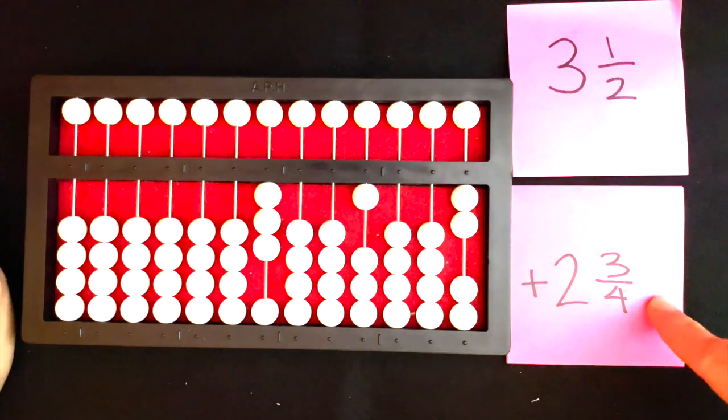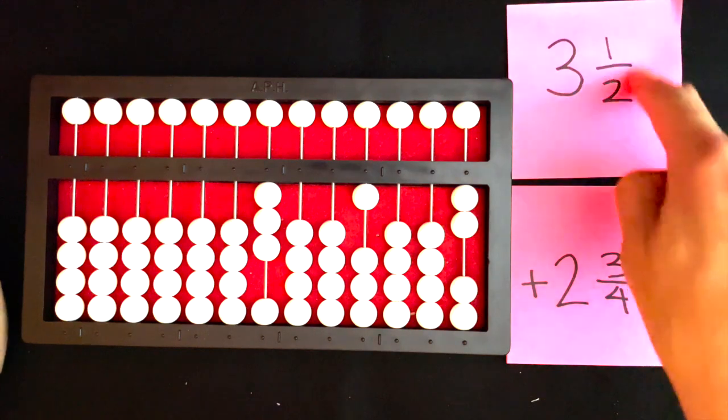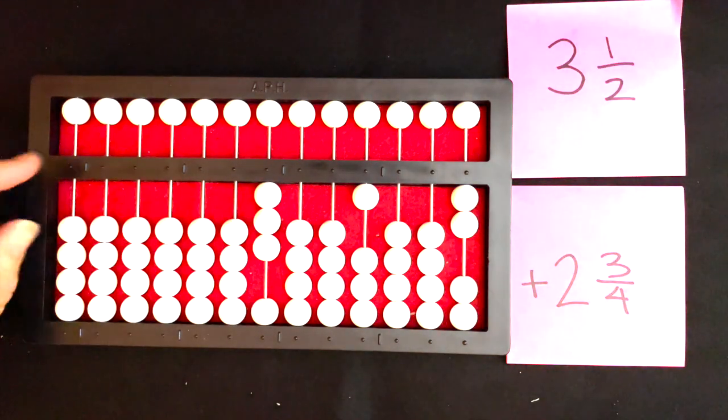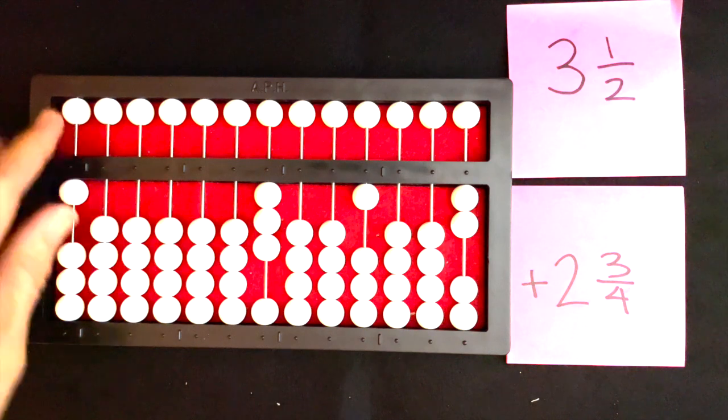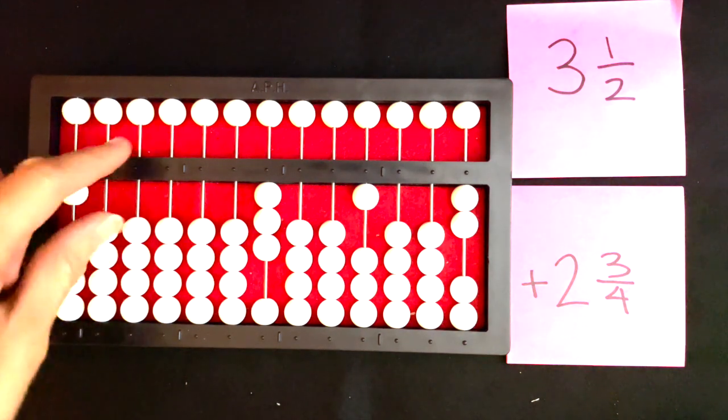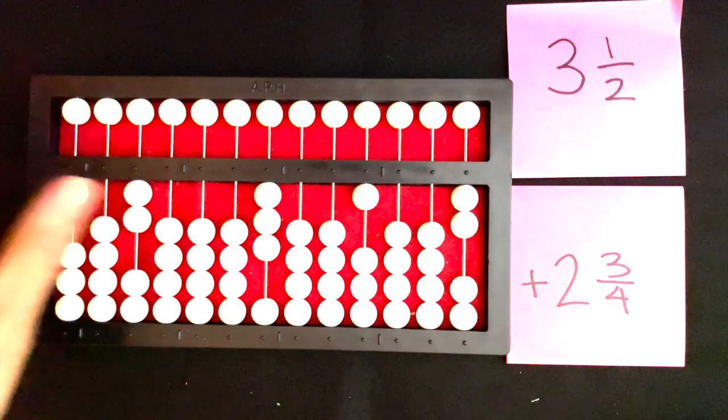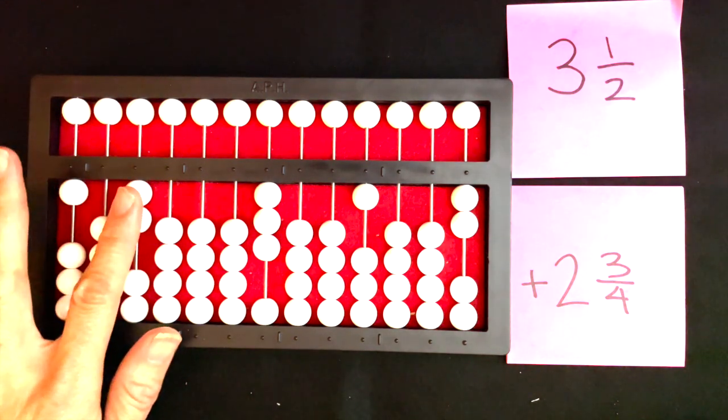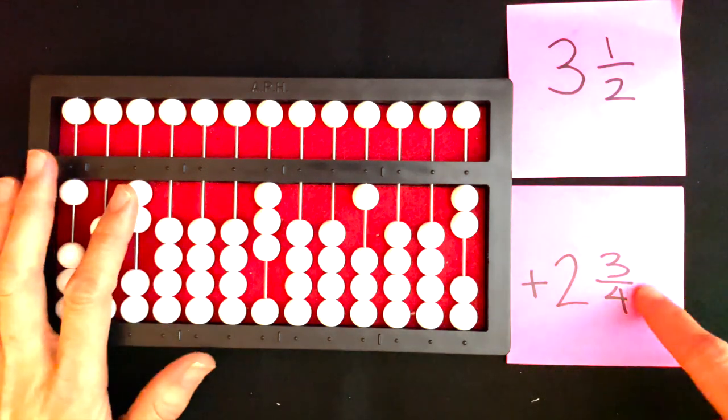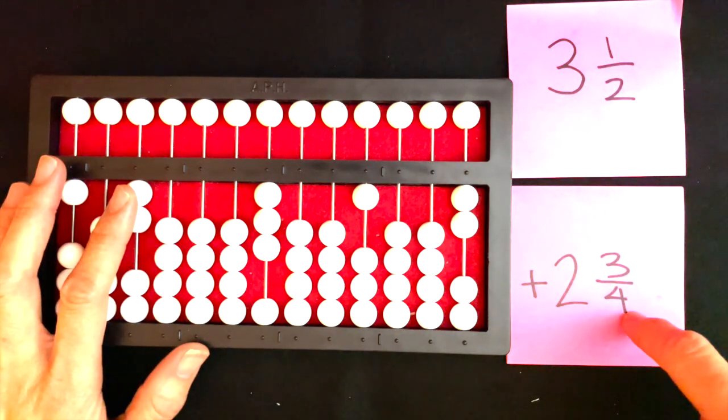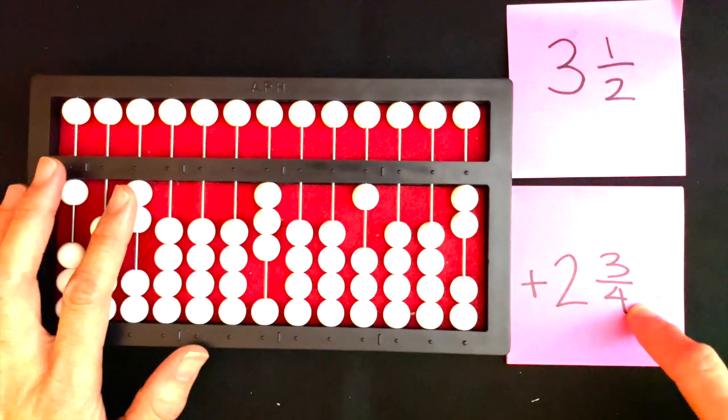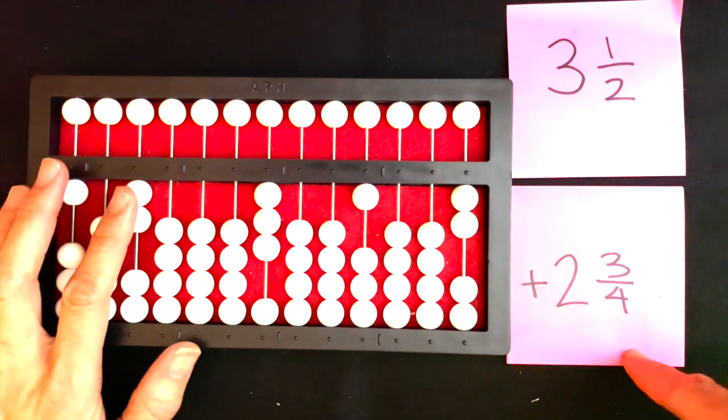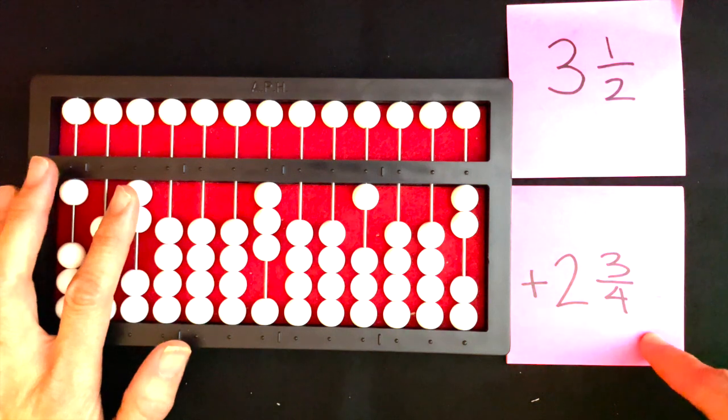I'm going to set my one half on the far left of my abacus with a one and then a space, one rod space, and then two next to that space. Now I'm going to think about my two and about my four in my denominator for my second addend. I know that two times two is four and I think that's the lowest common denominator that I can get.